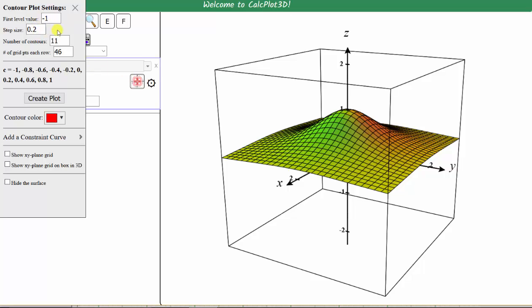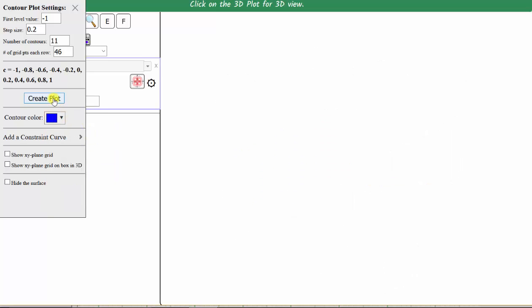Let's go ahead and use the default settings again, but let's change the color this time. Let's select blue, and then click create plot.